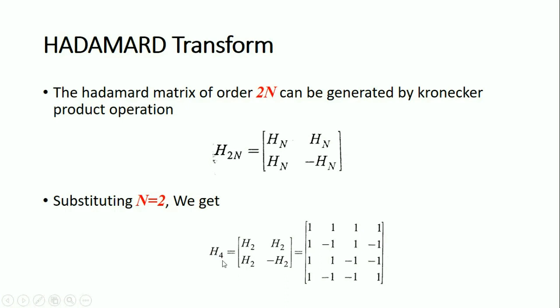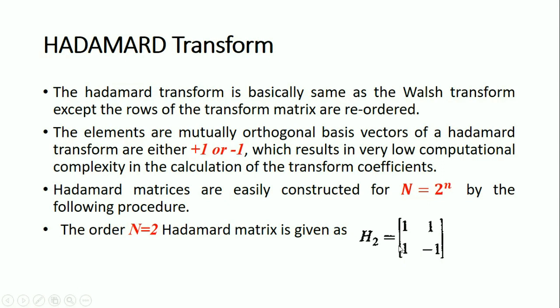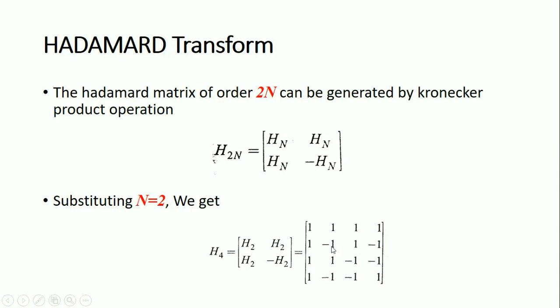So H4 equals the matrix [H2, H2; H2, -H2]. We already know that the Hadamard matrix for H2 is [1, 1; 1, -1]. So H4 has H2 matrices in the top-left, top-right, and bottom-left positions, and -H2 in the bottom-right position with elements [-1, -1; -1, 1].